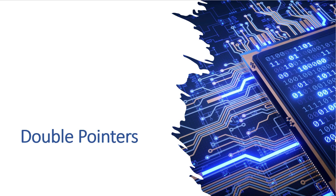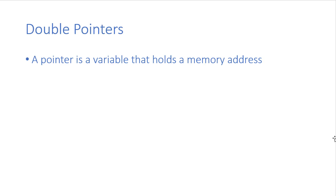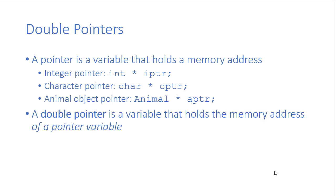Let's talk about double pointers. Remember that a pointer is a variable that holds a memory address — so an integer pointer, character pointer, animal object pointer — we can have a pointer to any variable. A double pointer is a variable that holds the memory address of a pointer variable. Just like an integer pointer points to an integer, a double pointer points to a pointer.